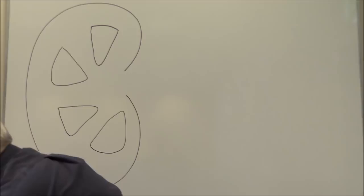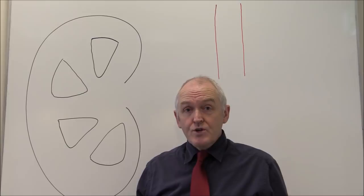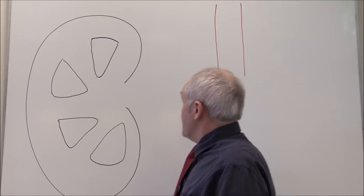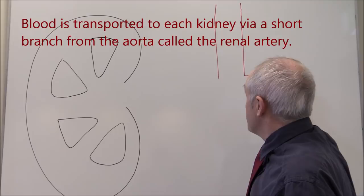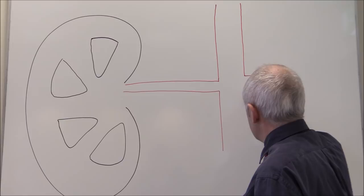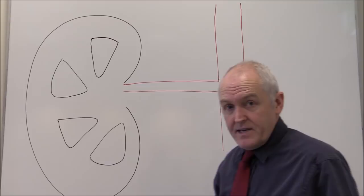Here we have the aorta carrying blood down from the left ventricle. As you know, the aorta originates in the left ventricle, arches round — you have the thoracic aorta going through the diaphragm into the abdominal aorta. There's a branch going to the left kidney — that will be the left renal artery — and here we have a branch going to the right kidney. The aorta carries on further down to supply the lower half of the body. So we have a renal artery entering through the hilum of the kidney.